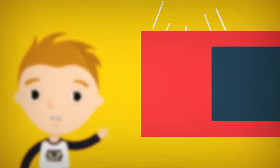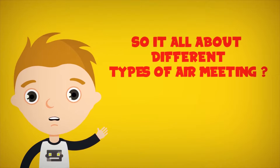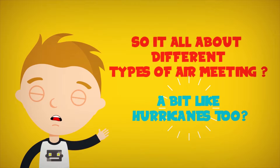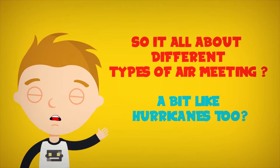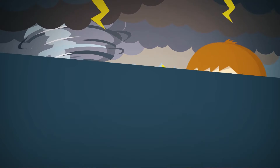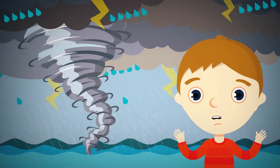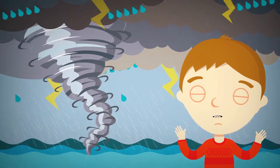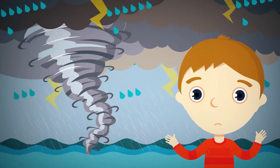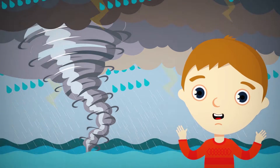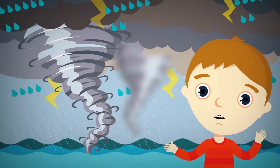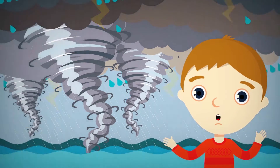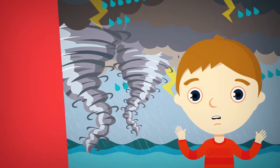So it is all about different types of air meeting — a bit like hurricanes too. Yes, I suppose you are right. Hurricanes usually form over the ocean, and sometimes hurricanes can create tornadoes too.